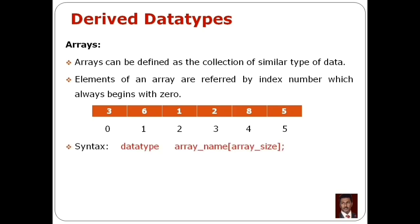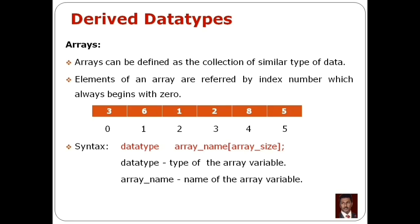We will declare a syntax for an array. We bring the data type, then a space, then the name of the array, and then square brackets with the size mentioned, followed by a semicolon. The data type is the type of array variable — what type of data to store. The array name is the name of the array variable. The array size is the number of elements we can store in that particular array.